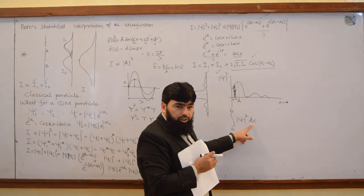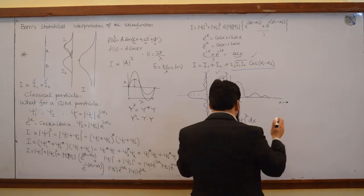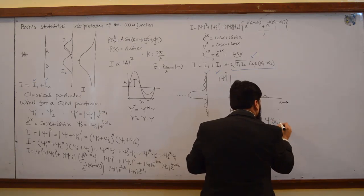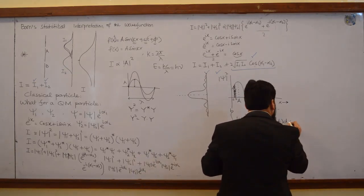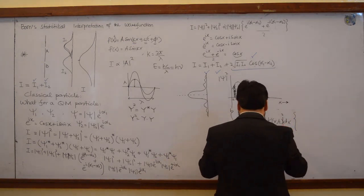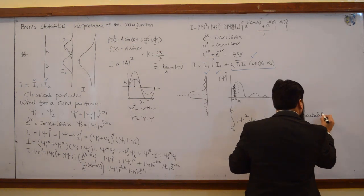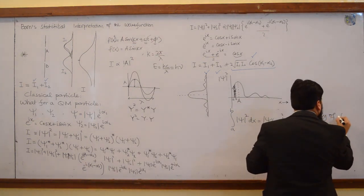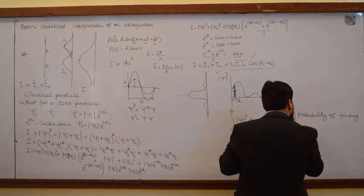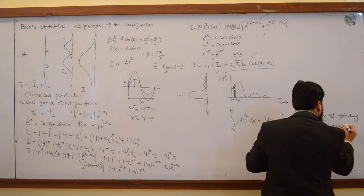This is |ψ|² which is the probability density. We will not multiply it with the volume because we are having a one-dimensional situation here — our wave function is one-dimensional, so we will multiply it with the length dx. If our wave function will be three-dimensional, then we will multiply it with the volume dτ. So the integral of |ψ(x)|² dx gives you the probability of finding the particle from A to B.